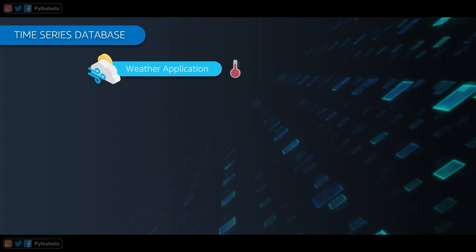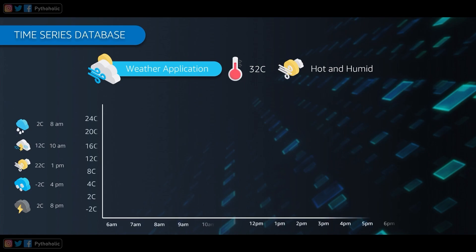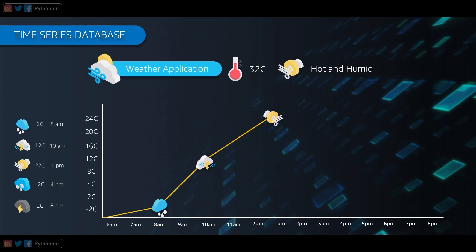Before moving forward, let's design an application — our very own weather application which shows us the temperature of cities at a given point of time and also shows what the weather is like for that particular time. To achieve this, we need the time and the data about the temperature and condition at that particular time. For the UI, we need a graph showing time and temperature. At 8 AM the temperature is 2 degrees and it will rain; at 10 AM it will be around 12 degrees with a slight chance of rain; at 1 PM around 22 degrees and slightly windy; at 4 PM it's minus 2 degrees, and at 8 PM it is around 2 degrees.